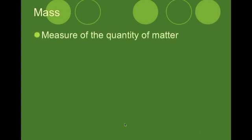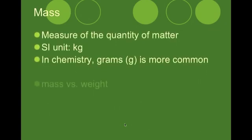Now mass. Mass is the measure of the quantity of matter. The SI unit we went over was kilograms. In chemistry, since we deal mostly on a micro scale, we use grams.